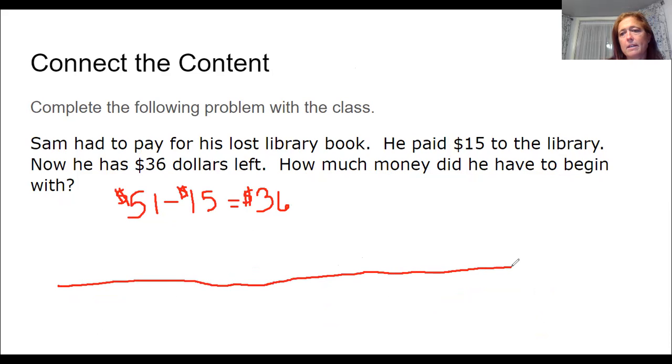So again, I have my number line. And here, I'm going to start over here with my 51 and I'm going to subtract 15 and see if I get to 36. So I'm subtracting 10, and that takes me to 41. And then I'm not real sure about subtracting five, so I think I'm going to subtract one first to get me to a multiple of 10. So that takes me to 40.